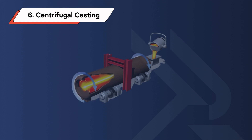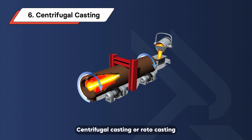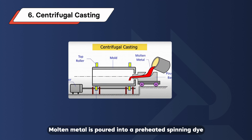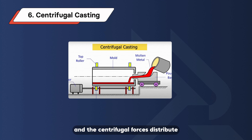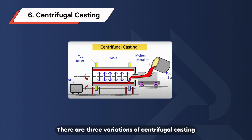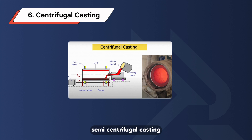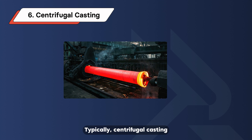Centrifugal Casting. Centrifugal casting, or rotocasting, is an industrial method for producing cylindrical parts using centrifugal forces. Molten metal is poured into a preheated spinning die, and the centrifugal forces distribute the metal within the die under high pressure. There are three variations of centrifugal casting: true centrifugal casting, semi-centrifugal casting, and vertical centrifugal casting. Typically, centrifugal casting produces rotational shapes like cylinders.